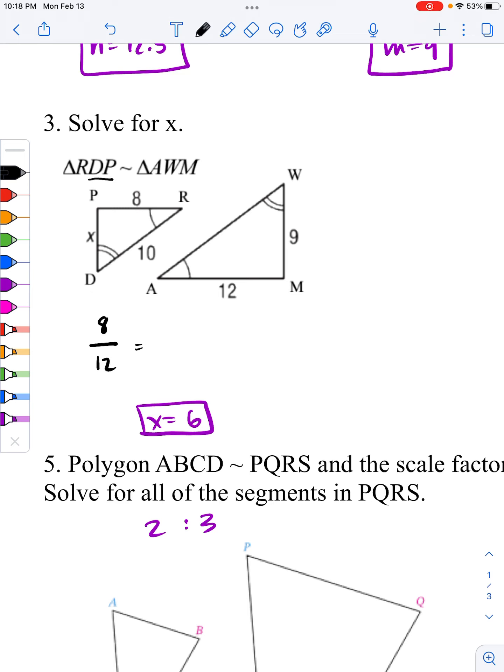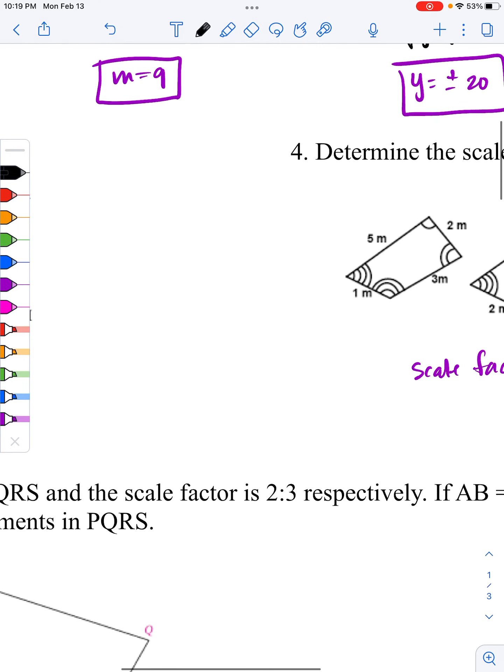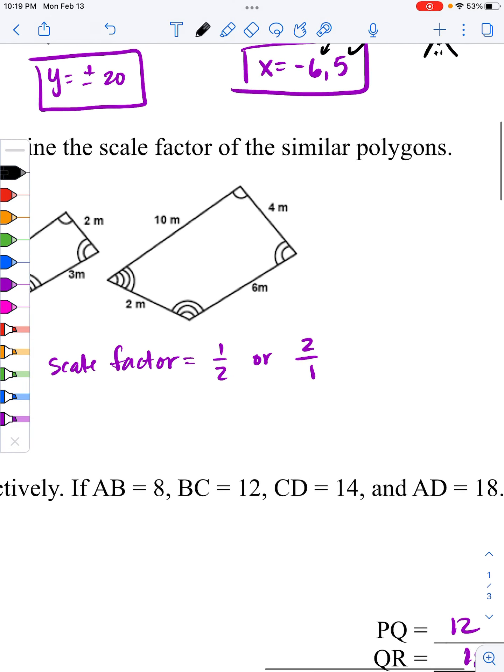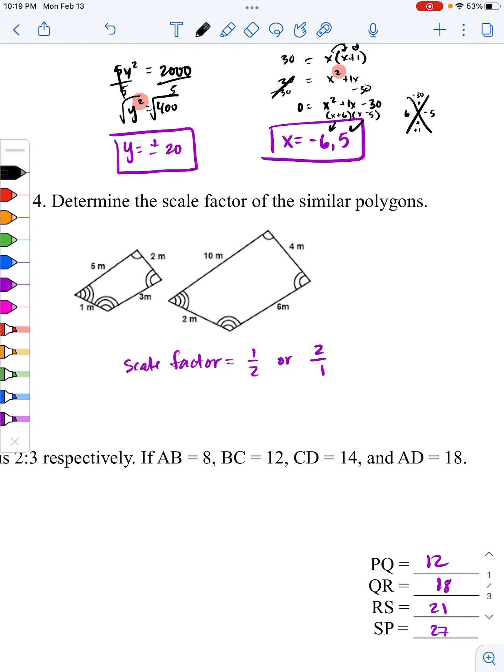So, looking at this, PD, and that should be corresponding to WM. So, PD is a value of x. WM has a length of 9. And here, we just cross-multiply and solve for x. This is from here on straightforward. I'm not going to finish this one up.